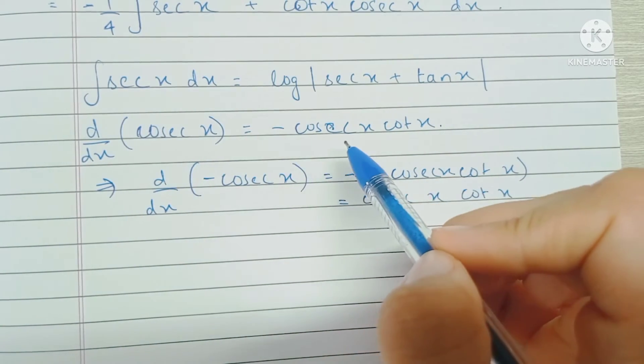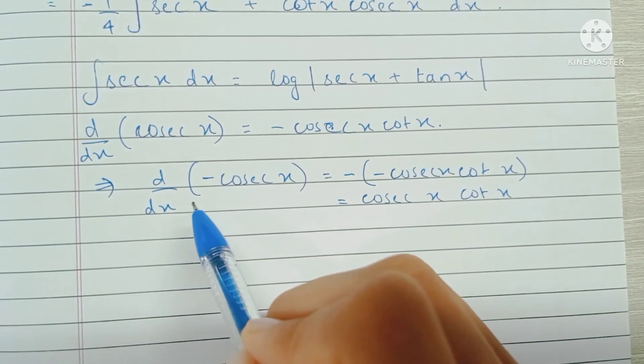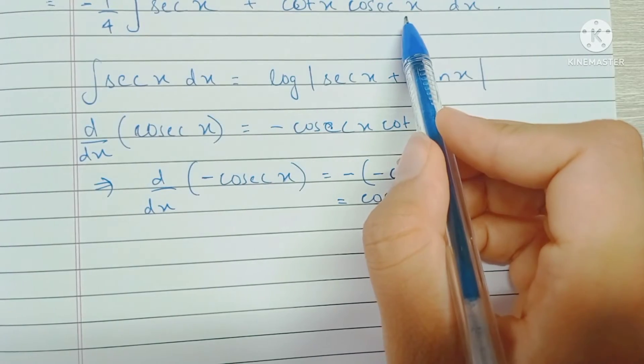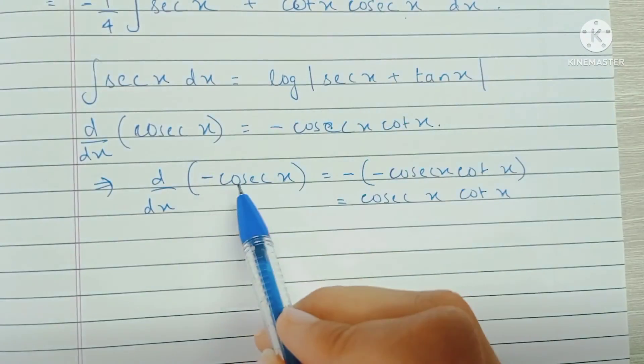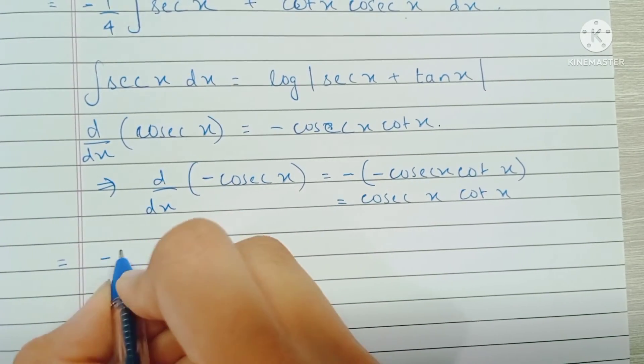This implies that the differentiation of minus cosec x would be cosec x cot x. So the integration of this term right here would be minus cosec x.